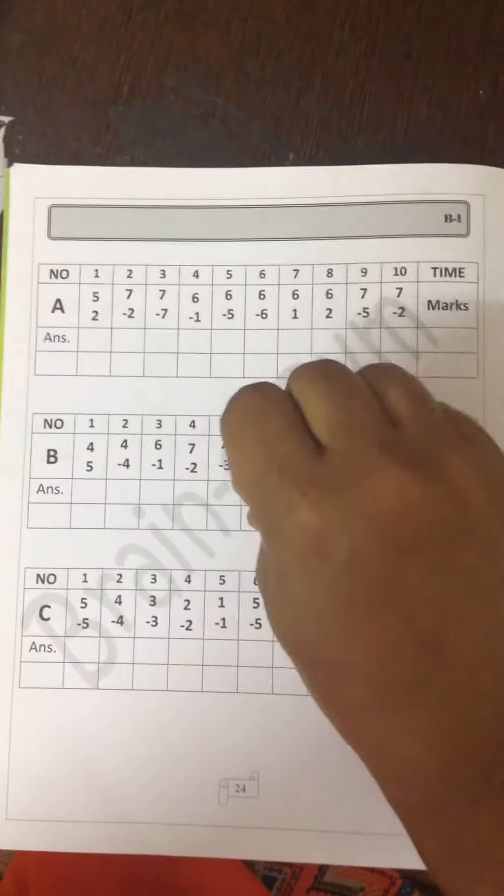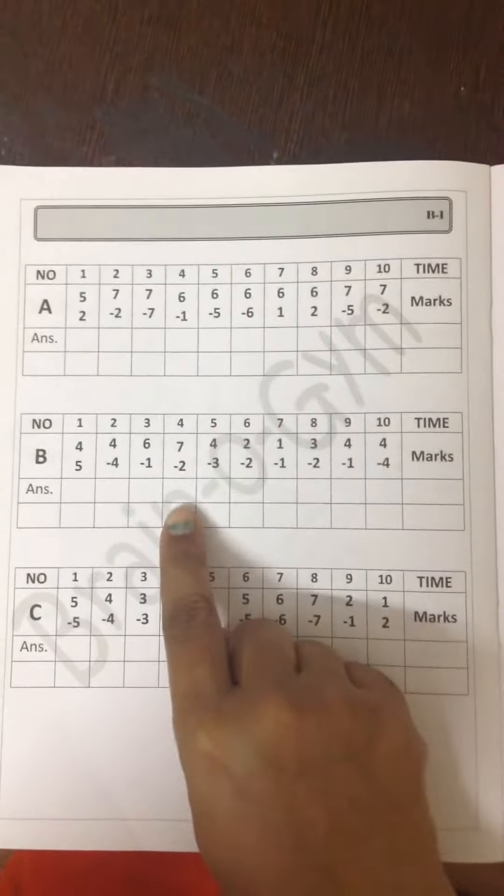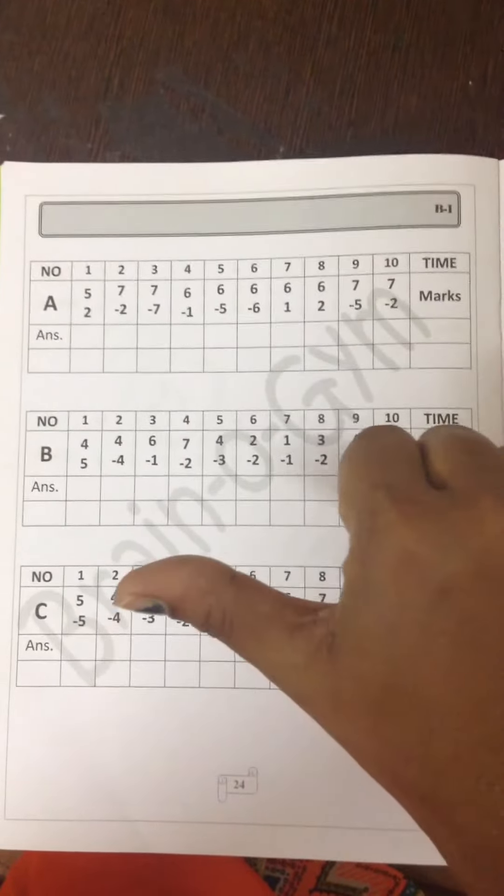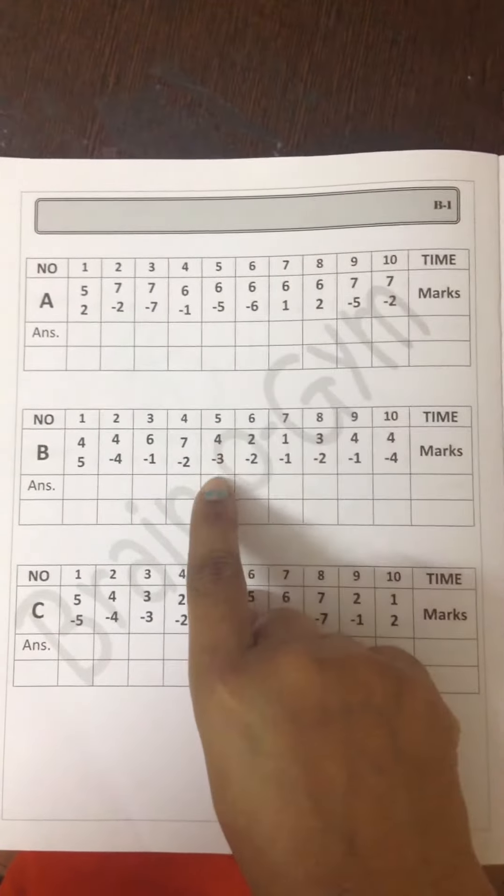4 minus 4. This is 0. 6 minus 1 is 5. The answer is 5. 7 minus 2. This is 5. 4 minus 3. This is 1.